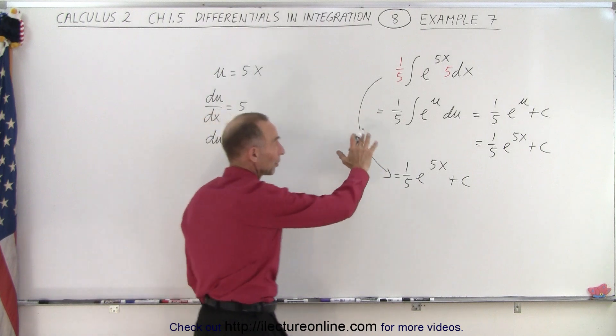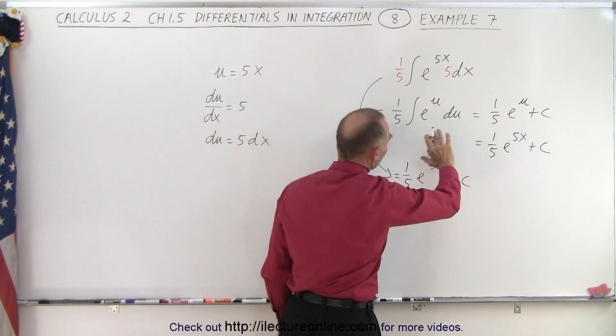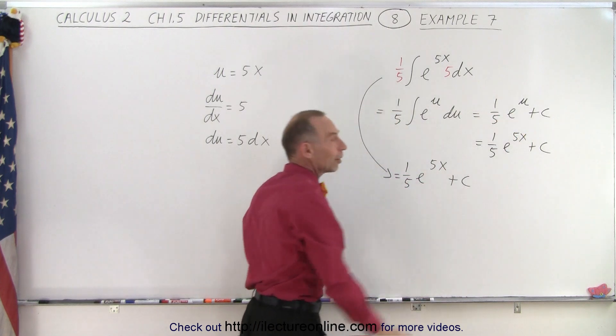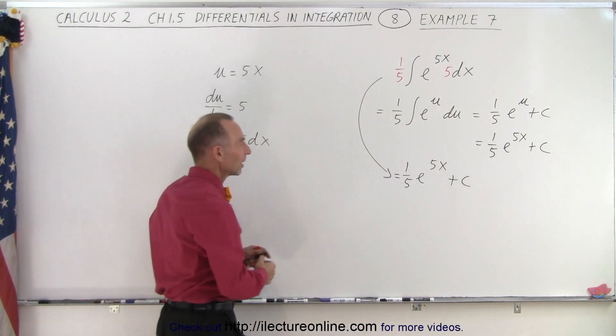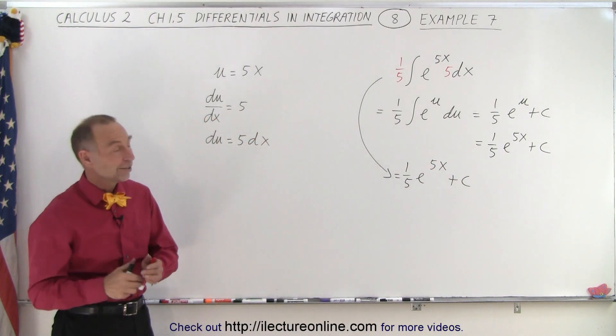So you can just bypass the step where you replace the function with u and du, although when it's easier to see it like this, by all means do that instead. And you can see that the final answer is this—you get the very same thing. And that is how it's done.